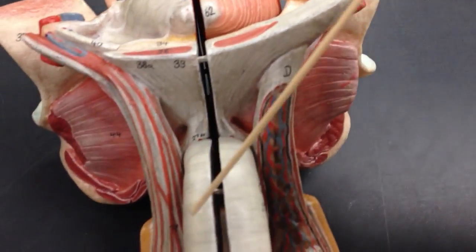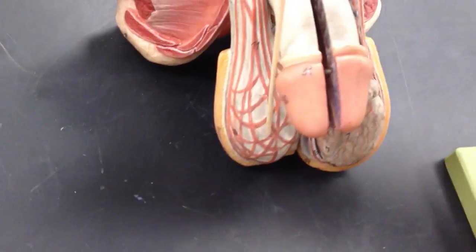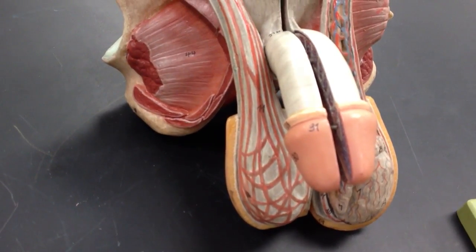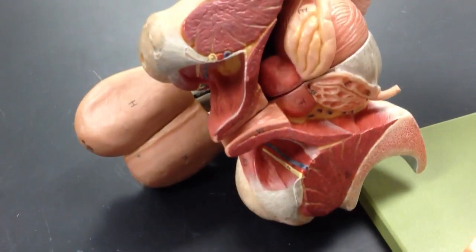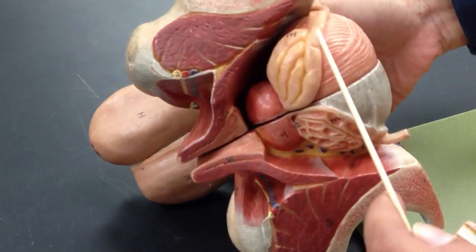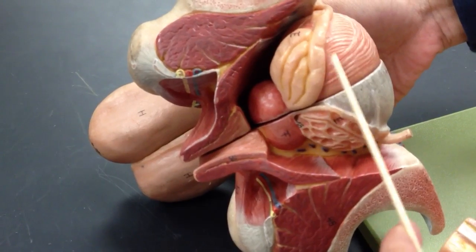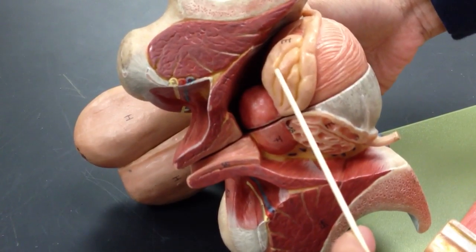Cremaster muscle are these red lines over here. Prostate is here. This is the ampulla of the vas deferens and the seminal vesicles.